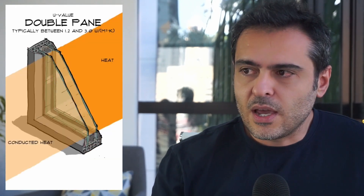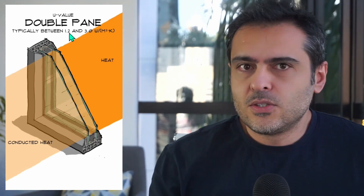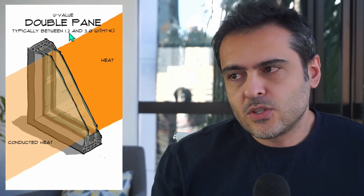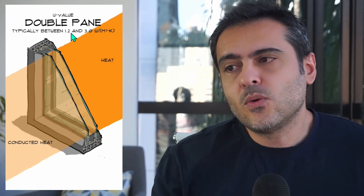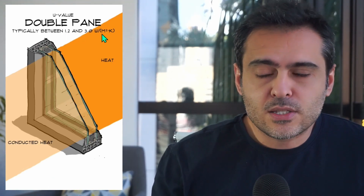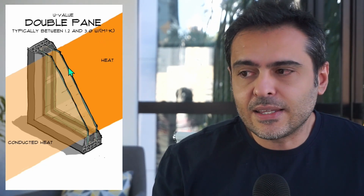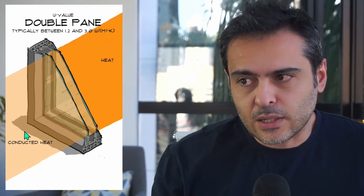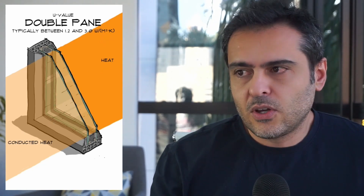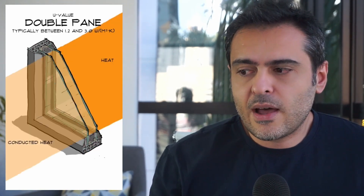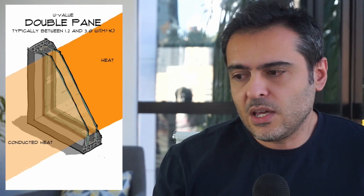What are the possibilities? One option is to use a double pane, such as this. The U-value is going to decrease to between 1.2 and 3 watts per square meter kelvin, so the conducted heat will be greatly reduced compared, for example, with single pane glazing.